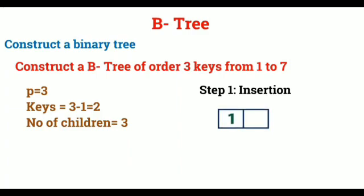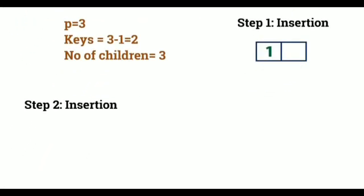Step 1 is the insertion. We need to insert 1 into a node. It is easy, right? Step 2 is also insertion. It is inserting 2 beside 1. Since it has 2 children, so 2 can be beside 1.